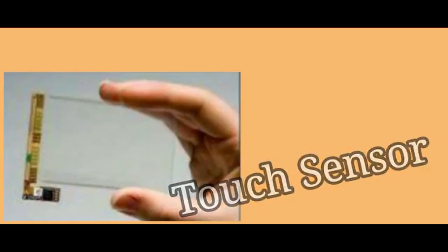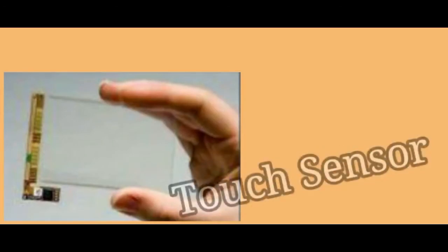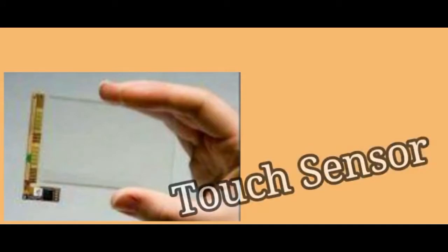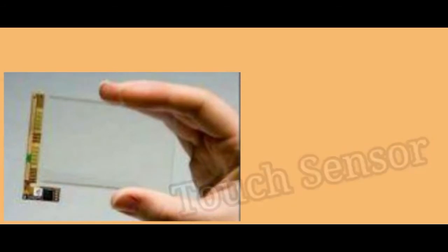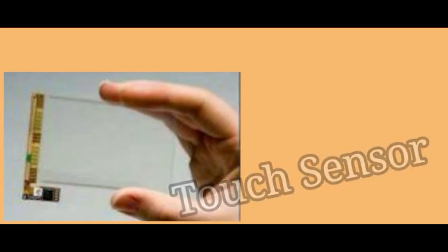Touch sensor. A touch screen sensor is a clear glass panel with a touch responsive surface. The touch sensor or panel is placed over a display screen so that the responsive area of the panel covers the viewable area of the video screen. The sensor generally has an electrical current or signal going through it, and touching the screen causes a voltage or signal change. This voltage change is used to determine the location of the touch to the screen.